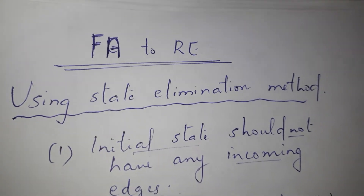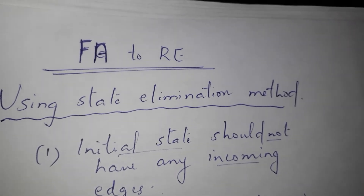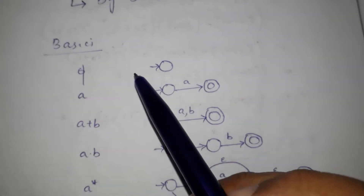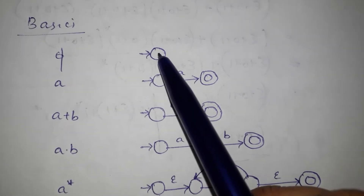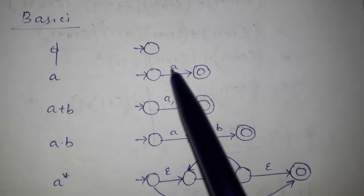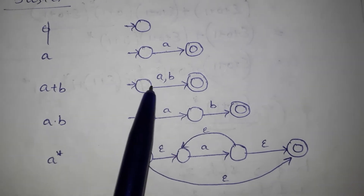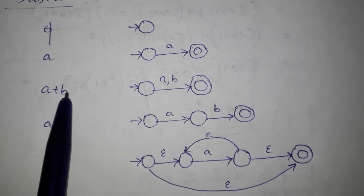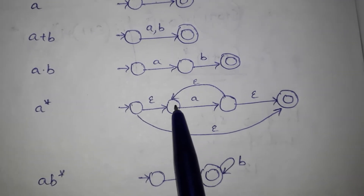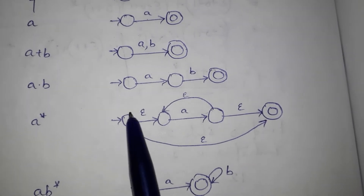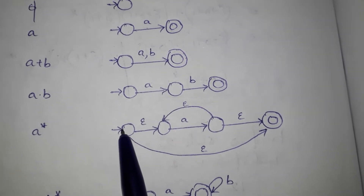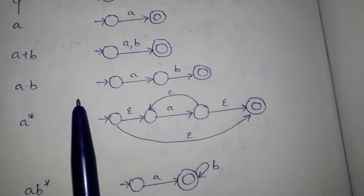We've done a very complicated method with state elimination. Now we've done a brief, basic method. We have the symbols A plus B, representing union. We have a star to represent the Kleene star. We have already studied epsilon star, that is L star. R plus S, R into S, R star — these are the three operations in regular expressions.